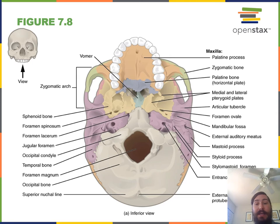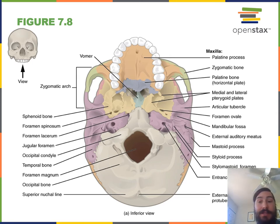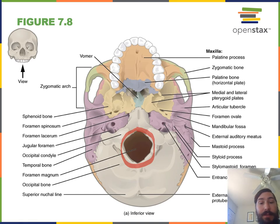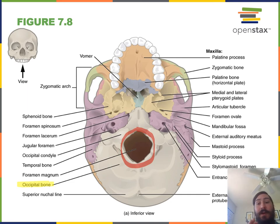In this inferior view of the skull, we have a nice perspective on the foramen magnum, which allows the brain to come down out of the cranium and contact with the spinal cord. The foramen magnum is part of the occipital bone, found on the posterior and inferior region of the cranium.